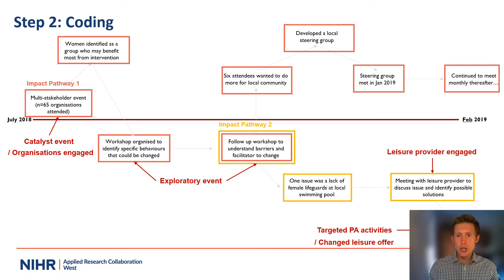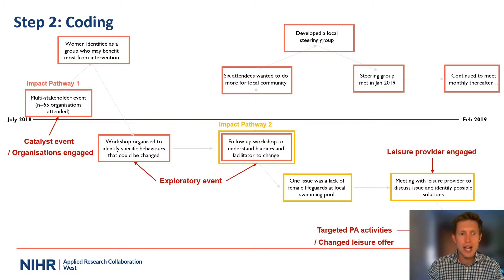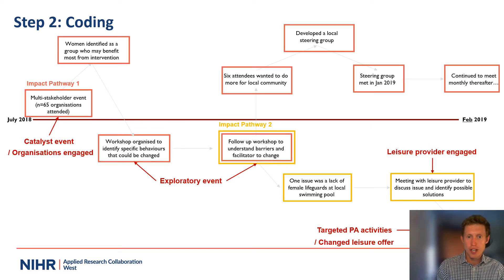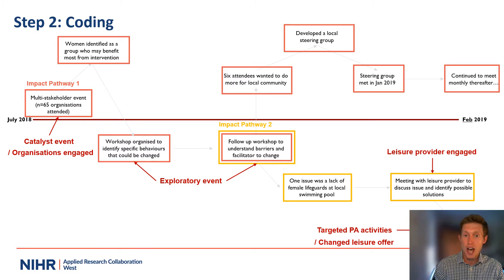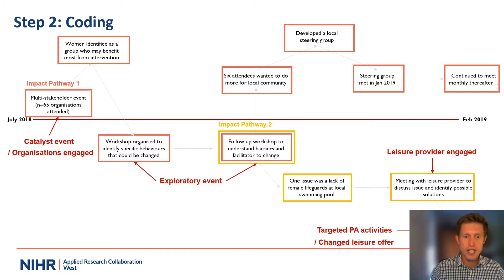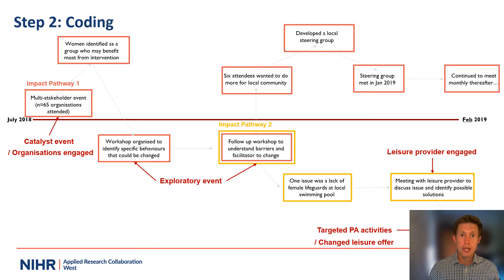Sometimes we need to read between the lines when coding — we're trying to understand what the output is telling us, and sometimes it isn't always explicit. In order to read between the lines, it can be really helpful to make sure that you were in the ripple effect mapping session in the first place. If you weren't able to be there, you can record the conversations from those sessions so that you can understand the wider context around these ripple effect mapping outputs being produced.